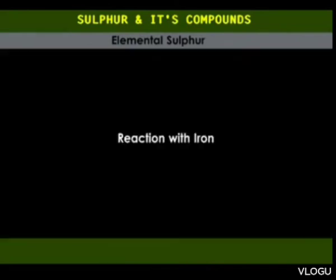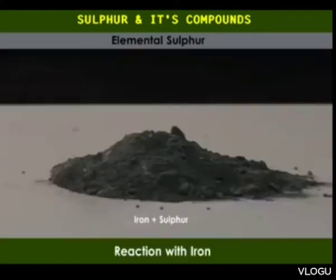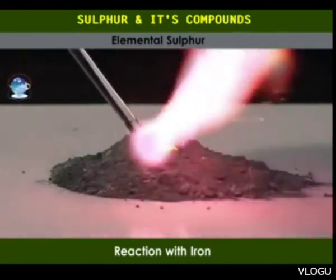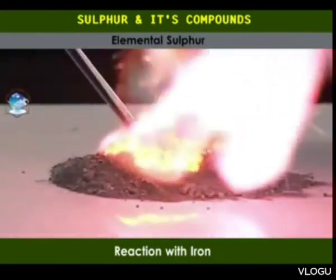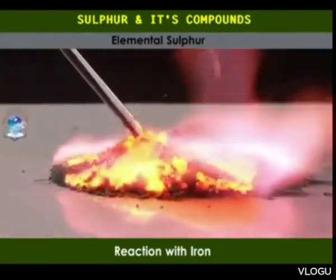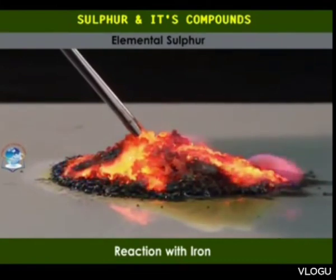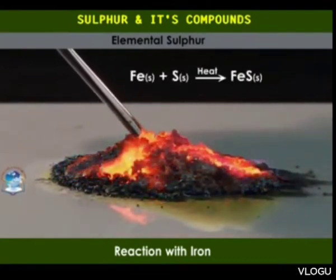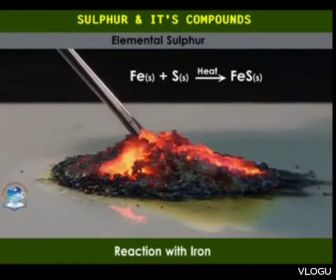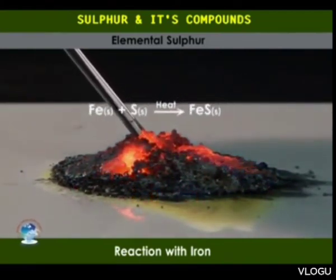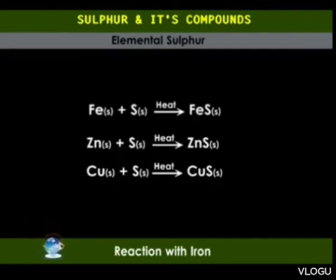Reaction with iron: when a mixture of iron and sulfur is heated, it starts to glow. The glow continues and increases in intensity even after the heating is stopped, showing that the reaction is exothermic. A black solid of iron(II) sulfide is formed. Other metals like zinc and copper also react with sulfur when heated, forming metal sulfides.